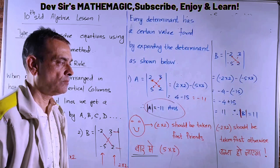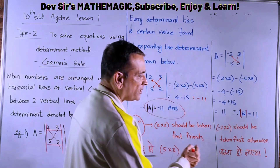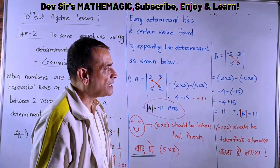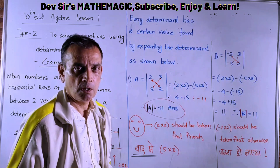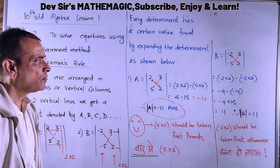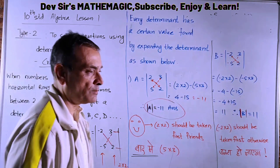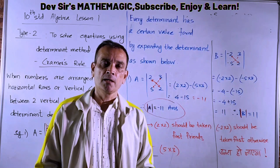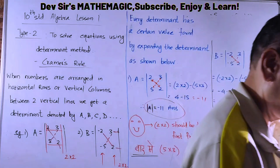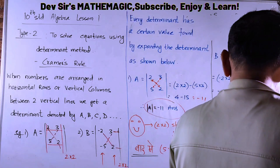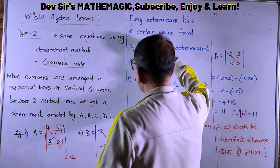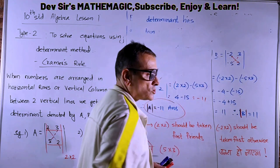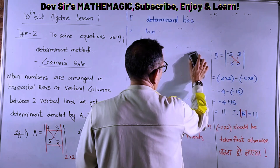An important note: the top-left to bottom-right diagonal must always be taken first; otherwise the answer will be reversed. This is the meaning of a determinant. Before we see how to solve equations using the determinant method, we need to know how to calculate a determinant. Let us now take one example from the textbook — please bring your notebooks.